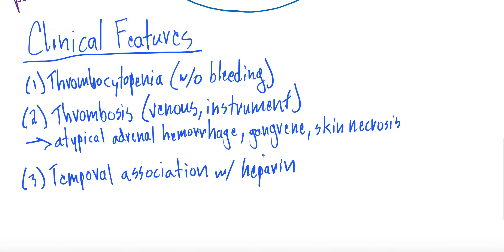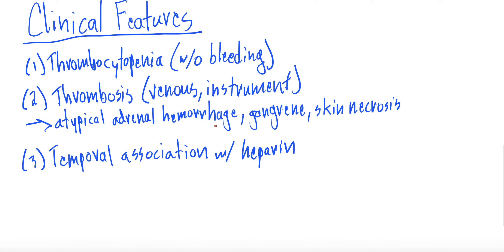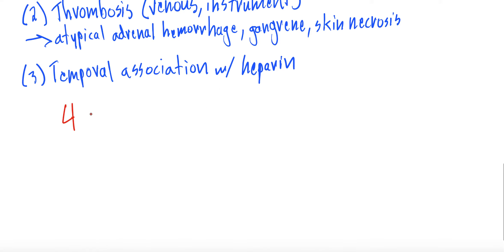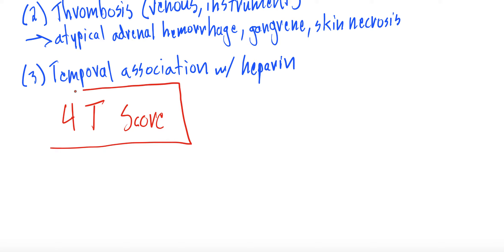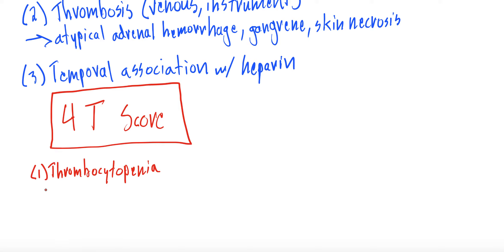Related to diagnosis, the tool you'll always discuss on the floors is the 4T score. This risk-stratifies patients and tells you where to go from there. The 4T score uses the diagnostic features we discussed. The first T is thrombocytopenia, scored as a point system: a greater than 50 percent fall in platelet count is 2 points; a 30 to 50 percent fall is 1 point; and less than 30 percent is 0 points.